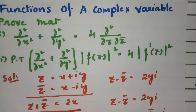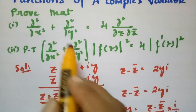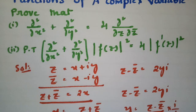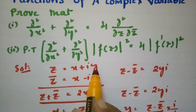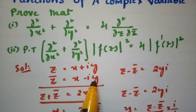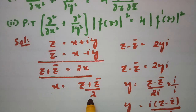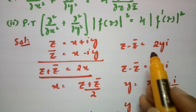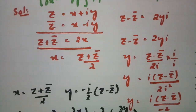It is very clear. These are the two proofs we had to do. First, as you know, z = x + iy and z̄ = x − iy. If you add them, you get the x value; if you subtract, you get the y value.